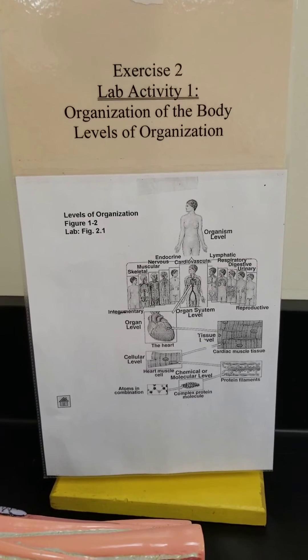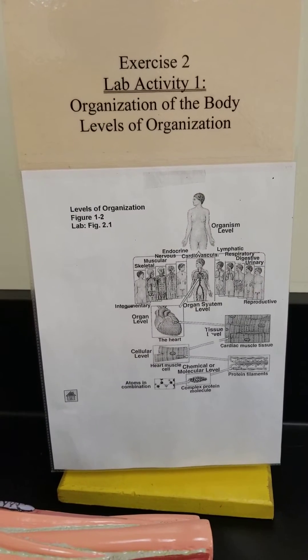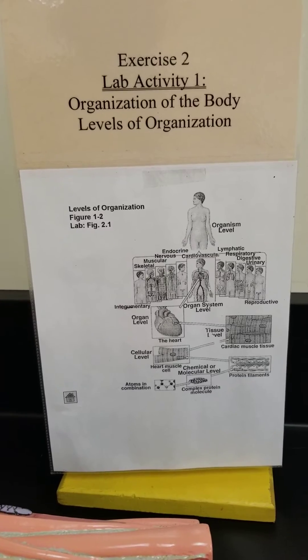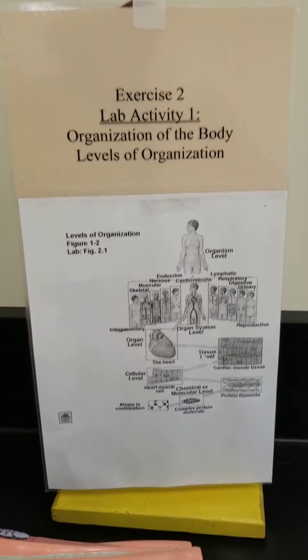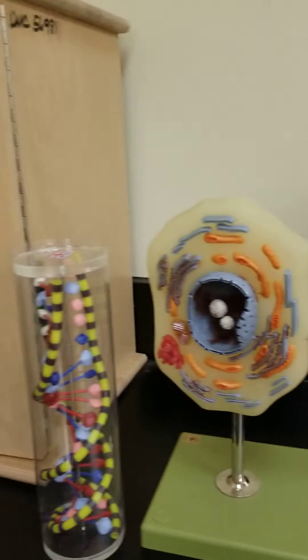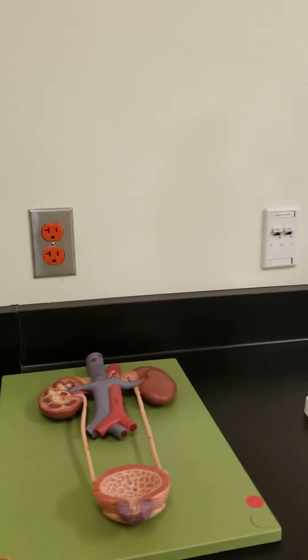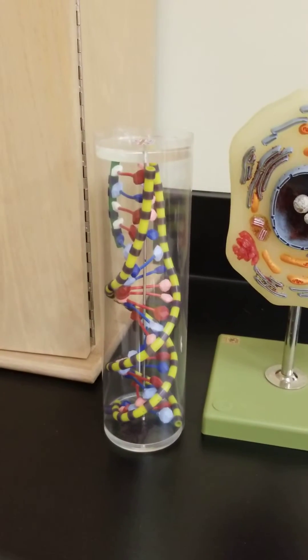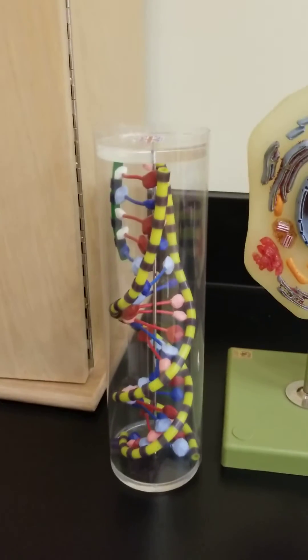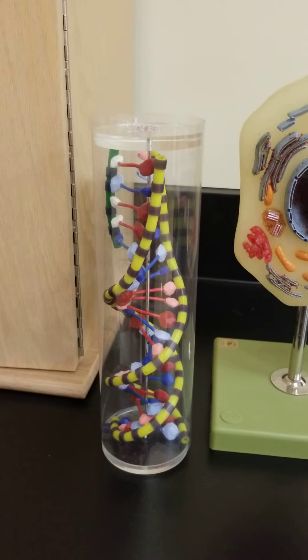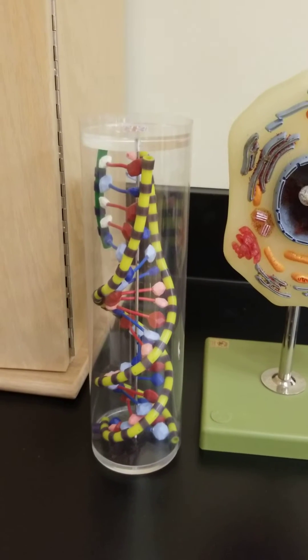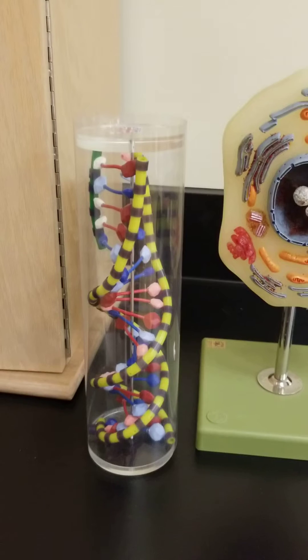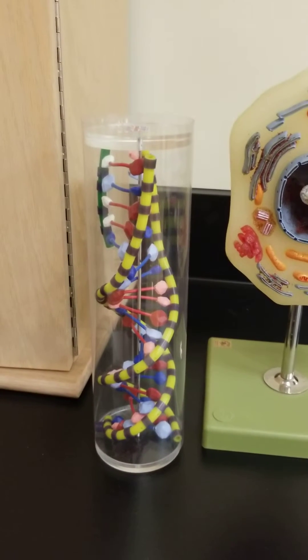This is a short video to go over Lab 1, Exercise 2, Lab Activity 1: the levels of organization of the body. We have a model that represents each of the six levels of organization. It's not necessarily important to identify the model — what you're supposed to identify is the level that it represents. For example, this model right here is a molecule of DNA, but it doesn't matter that it's DNA. What matters is that it represents the chemical or molecular level.